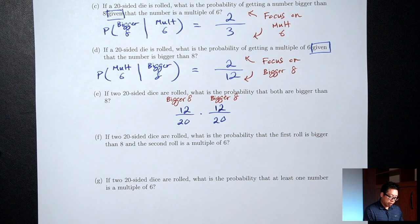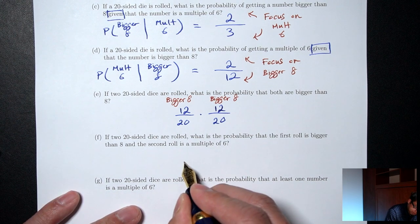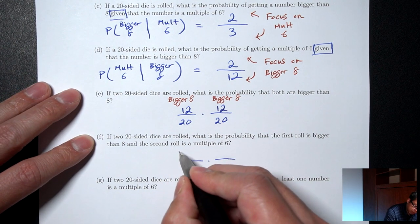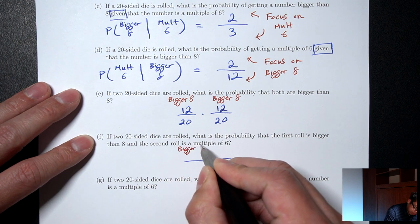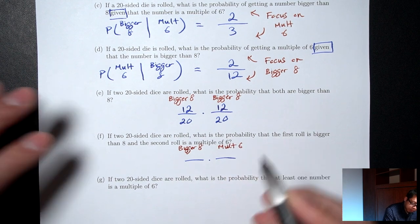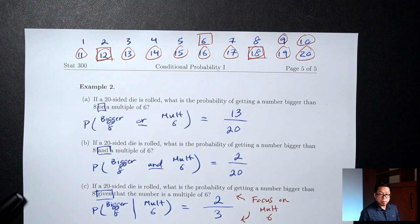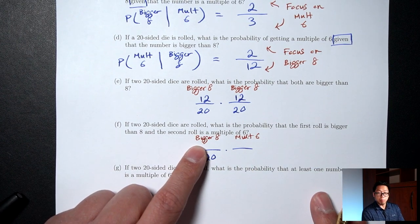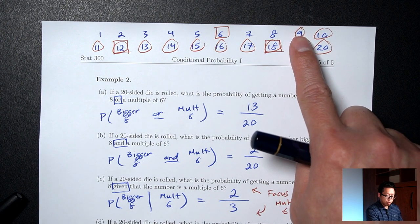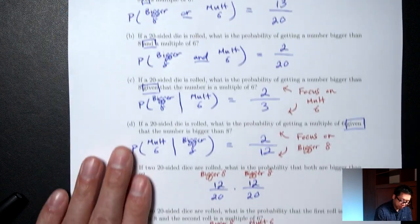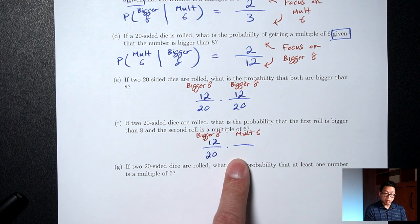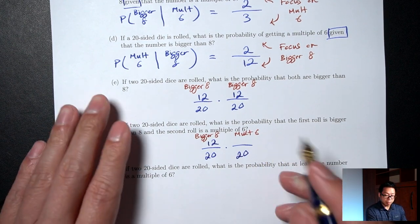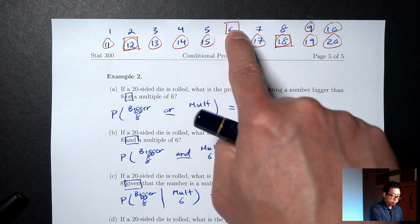Part F: if two 20-sided dice are rolled, what's the probability that the first roll is bigger than 8 and the second roll is a multiple of 6? First fraction: bottom 20, top is bigger than 8 which is 12. Second fraction: because it's dice, we don't reduce — bottom is still 20. Top: how many are multiples of 6? The boxes — that's 3. So P = 12/20 times 3/20.